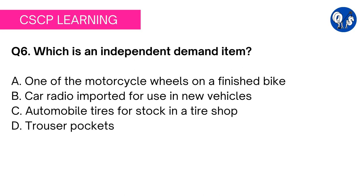Independent demand is the demand for a finished good, such as a car, while dependent demand is the demand for a component part of a finished good, such as the tires of a car. Dependent demand is derived from the demand for a finished good. If the independent demand for a car is 100 vehicles, then the associated dependent demand will be 400 tires, assuming 4 tires per car.